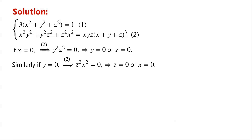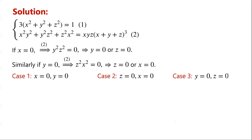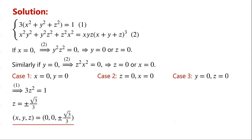Next we divide the problem into different cases. Case one: x equals zero and y equals zero. If x equals zero and y equals zero, then equation one becomes 3z squared equals one. So z equals plus or minus root three over three. So (x, y, z) equals (0, 0, ±√3/3). Case two: z equals zero and x equals zero.